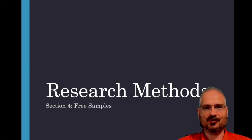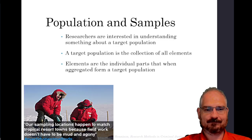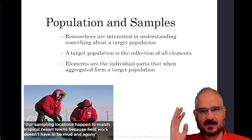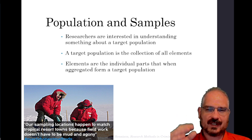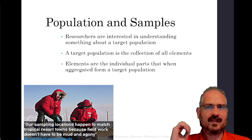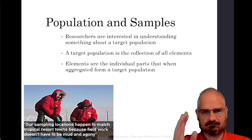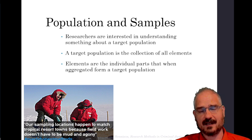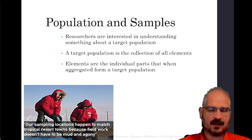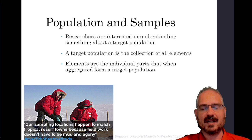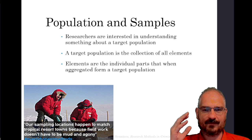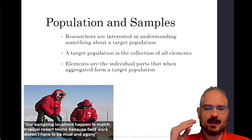Hello everybody and welcome back to research methods section four, where we're going to talk all about sampling. When we're doing research, especially in the social sciences, we're interested in some target population. That population might be all people in the United States, all registered voters in the state of California, or all prisoners in federal prisons — but there's some target population we want to know something about.